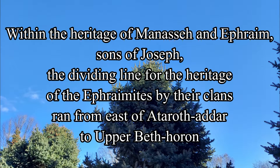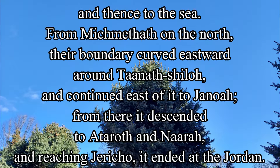Within the heritage of Manasseh and Ephraim, sons of Joseph, the dividing line for the heritage of the Ephraimites by their clans ran east from Ataroth-Adar to upper Beth-Horon, and thence to the sea. From Micmethoth, on the north, their boundary curved eastward around Ta'anoth-Shiloh, and continued east of it to Genoa.